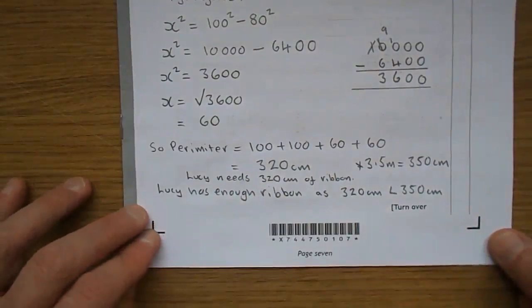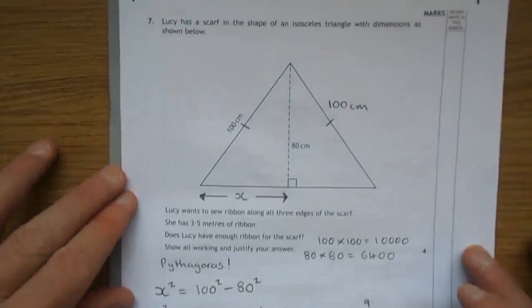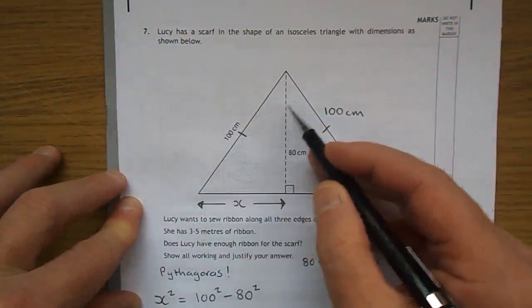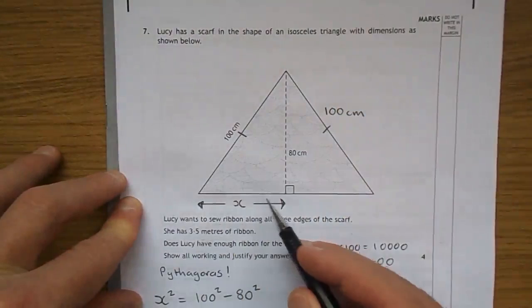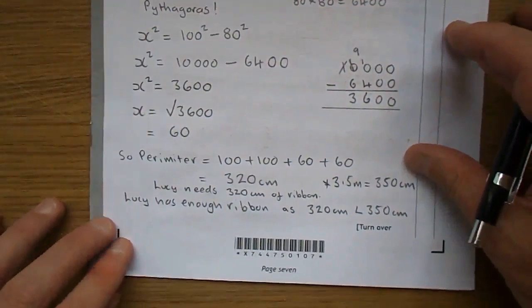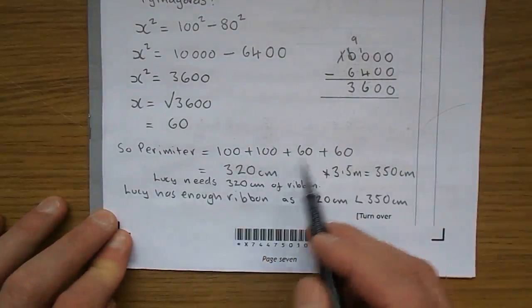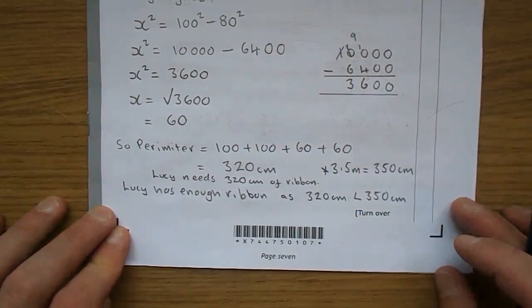So let's go and get the perimeter. We have the 100, we have the 100, and we have the two 60s. 100 add 100 and the two 60s gives you 320 centimeters.